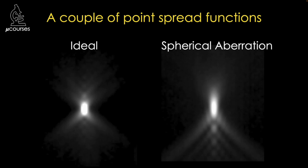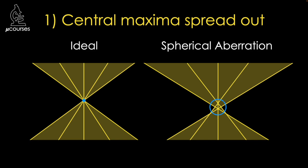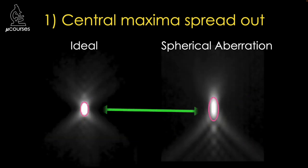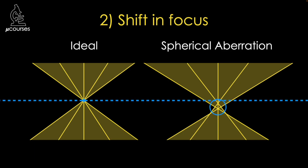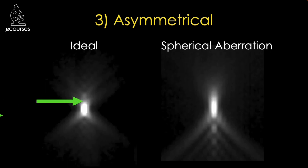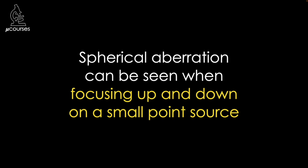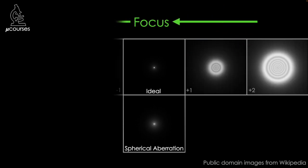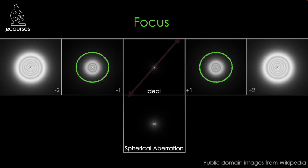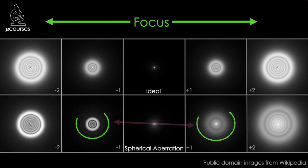Spherical aberration distorts the point spread function away from the ideal in three ways. First, the circle of confusion means that the central maxima of the point spread function is spread out in space. Spherical aberration also shifts the focused image into a different plane. And while an ideal point spread function is symmetrical, spherical aberration results in an asymmetrical point spread function. Spherical aberration can also be identified by focusing up and down on a point source in your specimen. If spherical aberration is present, the asymmetry of the point spread function will be evident.